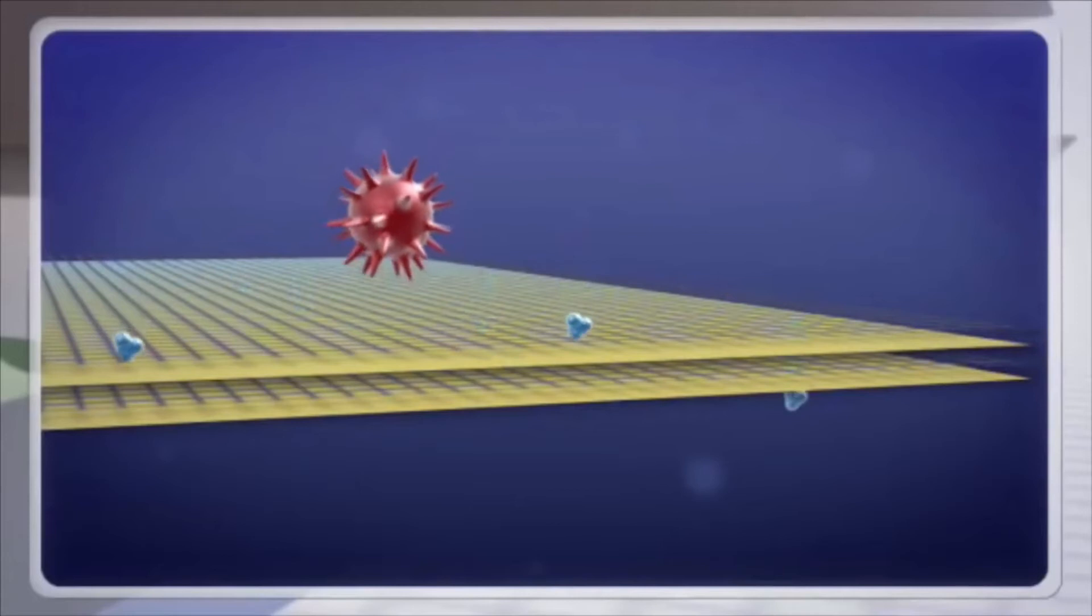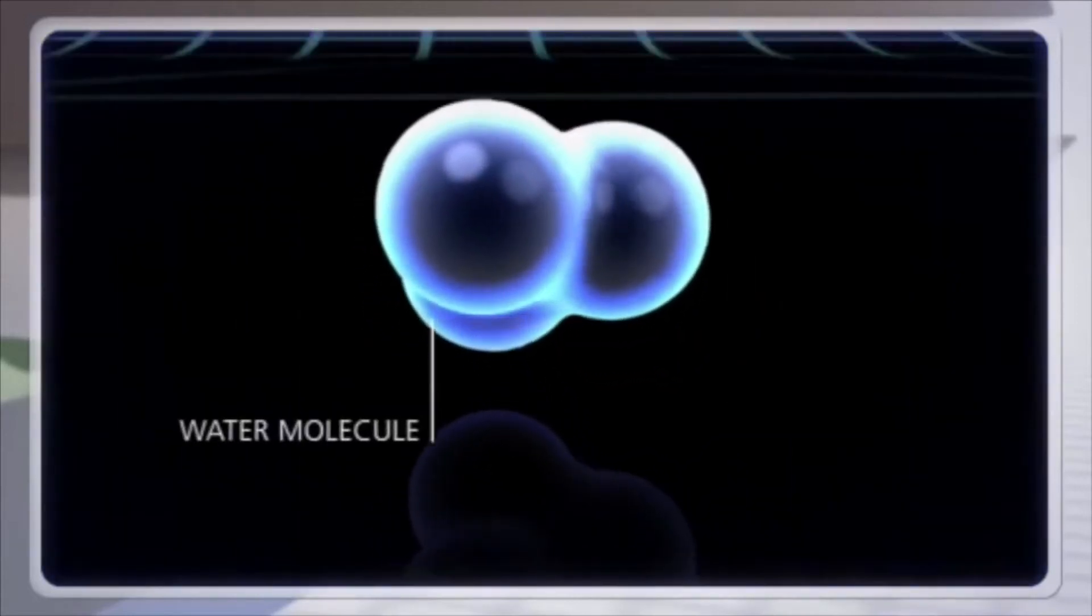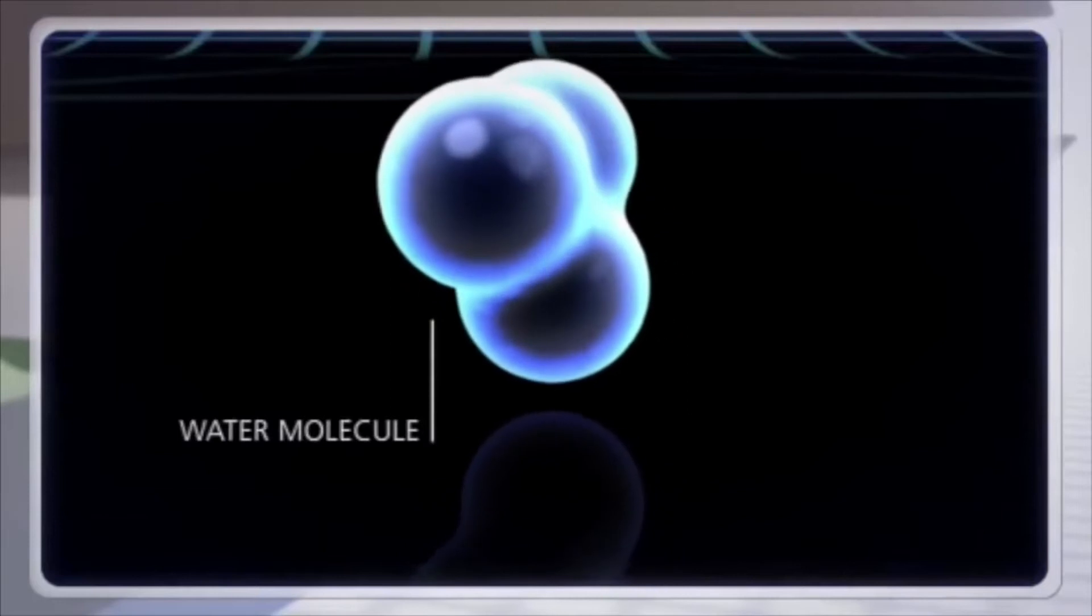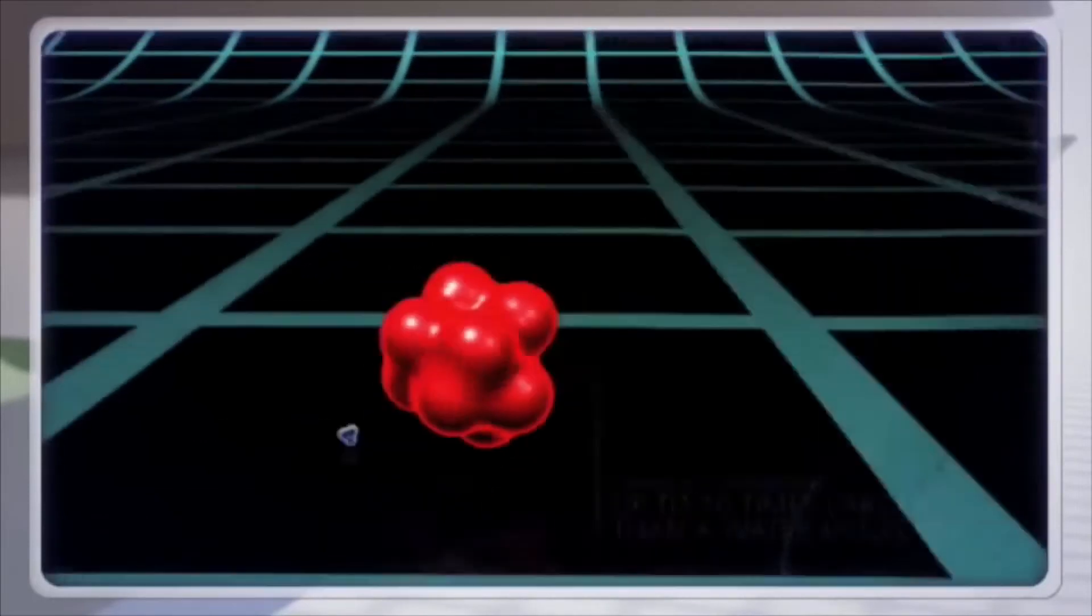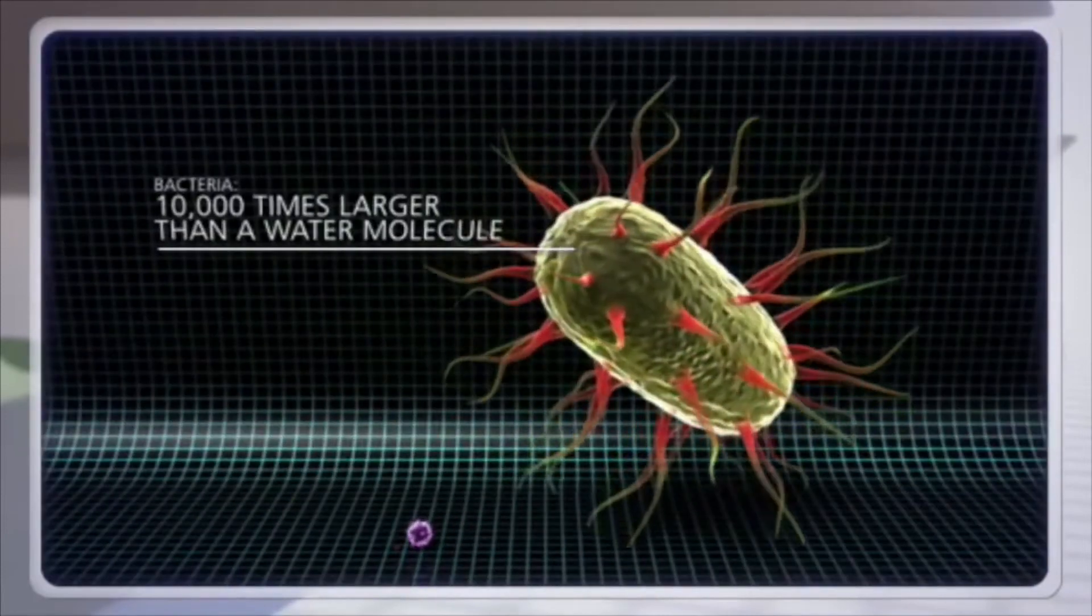Membranes remove molecules based on their size, shape and charge. Generally contaminants larger than water molecules will not pass through, including most chemical contaminants and all microorganisms such as viruses and bacteria.